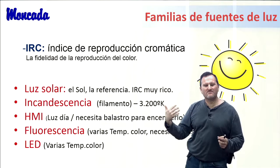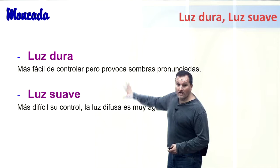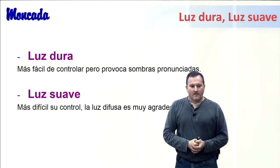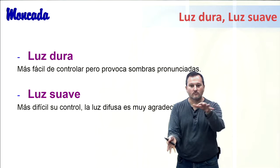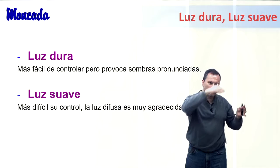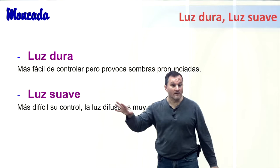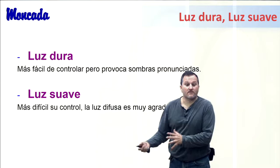El mundo LED es hacia donde vamos: ya han conseguido un IRC más que aceptable, con luminarias bicolor de varias temperaturas, con enfoque y dimmer con regulación de nivel, funcionando con baterías. Es el futuro, aunque lo que le falta aún son grandes potencias. En cuanto a luz dura versus luz suave: la luz dura hace sombras pronunciadas; la luz suave es más agradecida en cuanto a sombras y textura pero es más dispersa y difícil de acotar. Para efectos como rayos de luz en una pared, necesitas luz más dura.